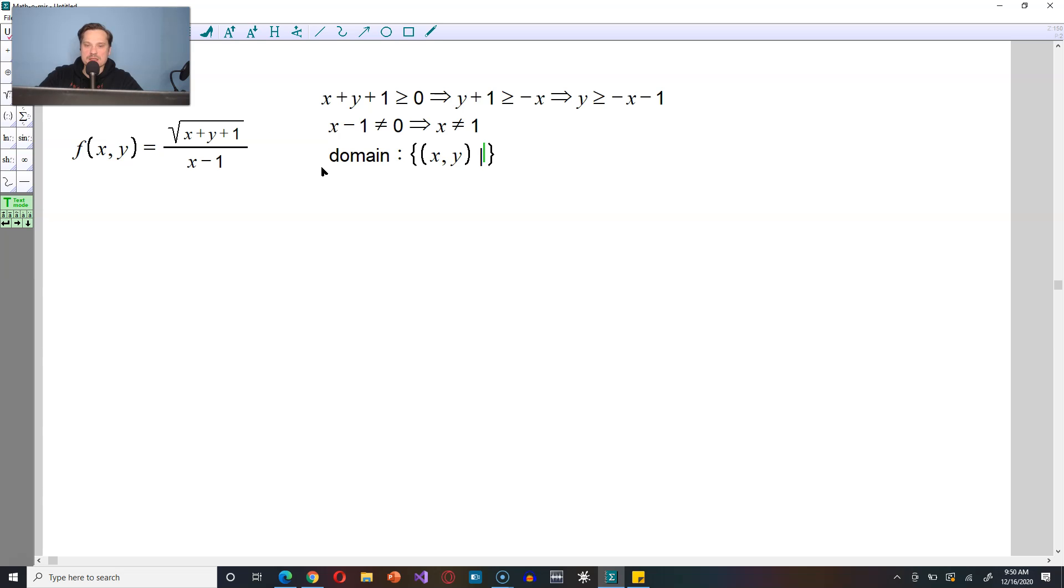Within here, you usually put a vertical bar that is read such that. So this is the set of all points (x,y) such that the following is true: y is greater than or equal to -x-1, and x here does not equal to positive 1.